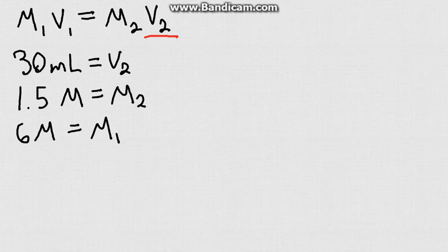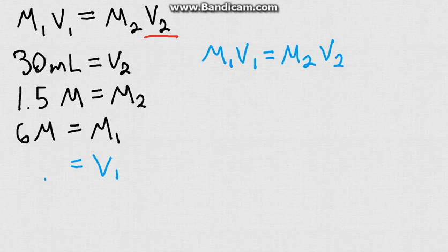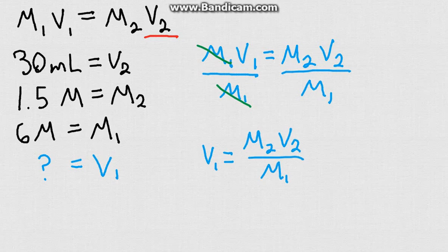So if you have all of these values, it's a pretty simple problem. Because all you have to do then is say, we know M1V1 equals M2V2. And we just need to rearrange this to find our unknown, which in this case is V1. So let's solve for V1 by dividing both sides by M1. The M1 on top and the M1 on the bottom cancel out. And so we will be left with V1 equals M2V2 over M1.